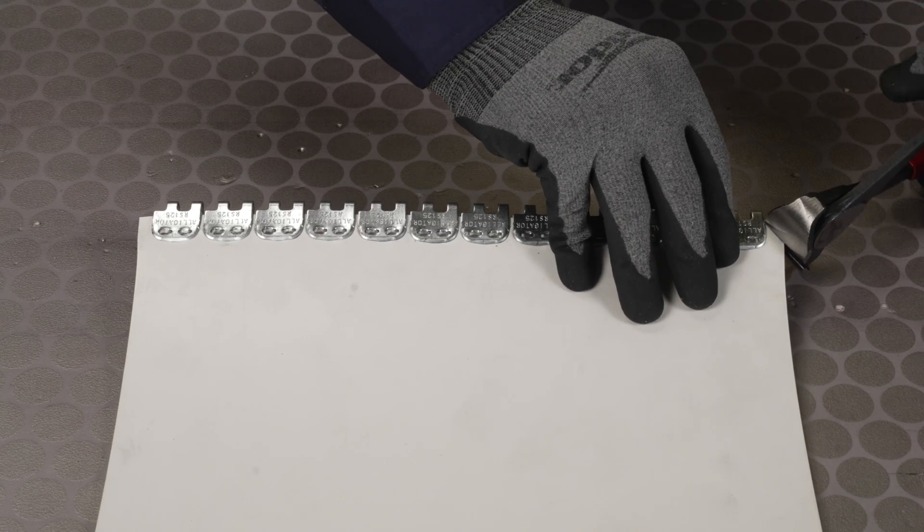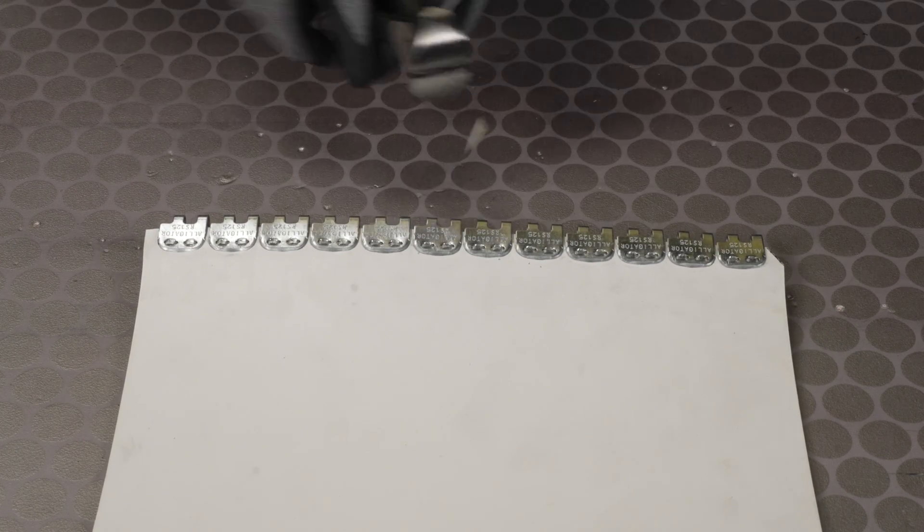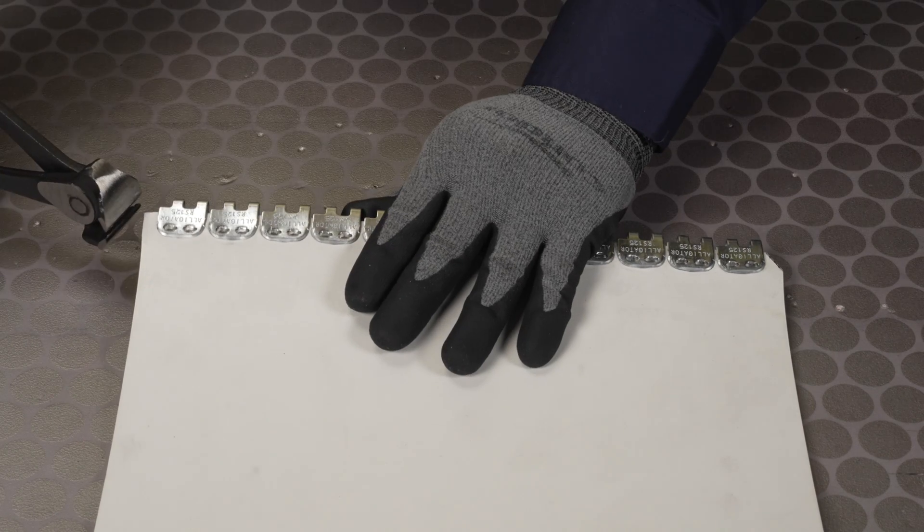Using belt nippers, notch only the trailing edge of the belt at approximately a 45-degree angle.